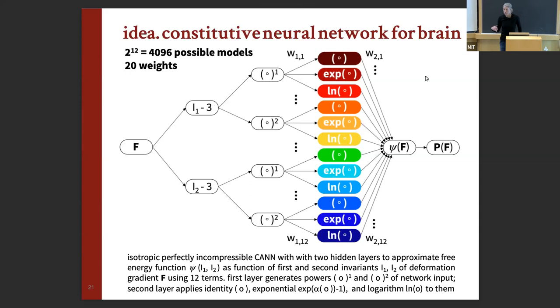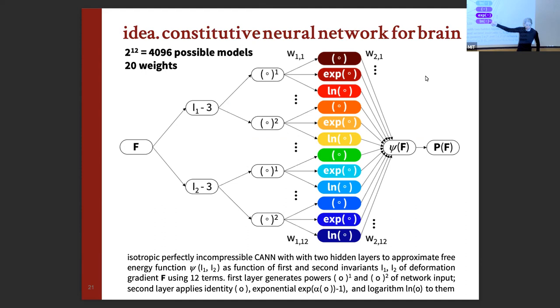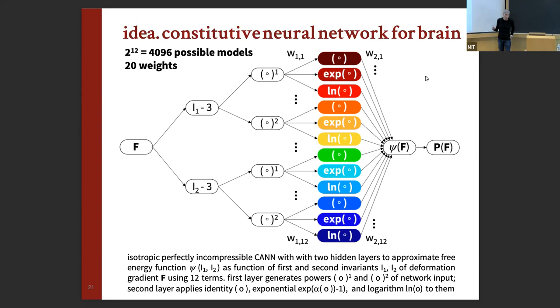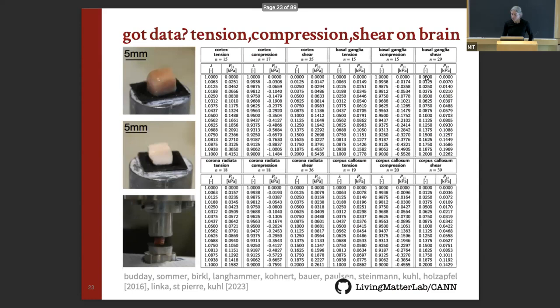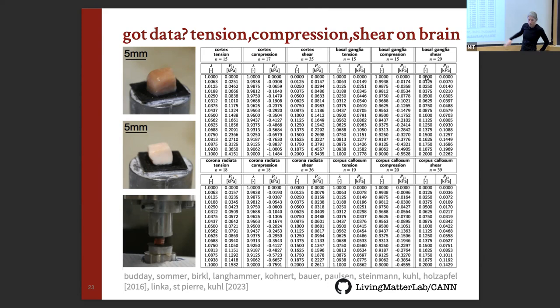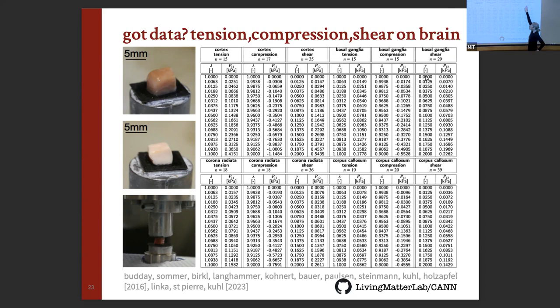Returning to the brain, which is more complex, we add a logarithmic function. Now each invariant has identity, exponential, and logarithmic terms — 12 terms total, giving 2^12 ≈ 4,000 possible models with 20 weights. Running this on the brain data from Sylvie — using the corona radiata, corpus callosum (white matter), and gray matter regions — with 39 samples averaged in one batch.